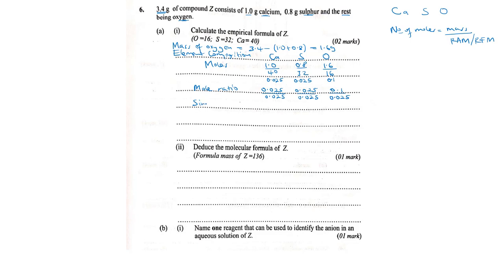The simplest ratio — remember, empirical formula is about the simplest ratio. Calcium: 0.025 ÷ 0.025 = 1. Sulfur: 0.025 ÷ 0.025 = 1. Oxygen: 0.1 ÷ 0.025 = 4. That means one calcium atom bonds with one sulfur atom and these two bond with four oxygen atoms. So the empirical formula required is CaSO₄ — calcium sulfate. Those are the two marks.